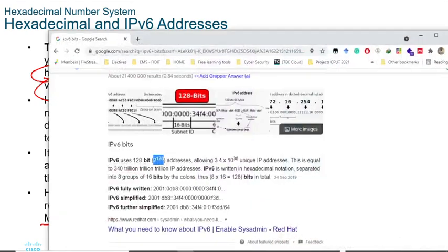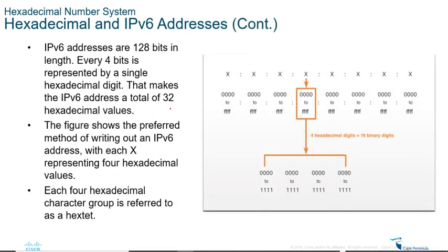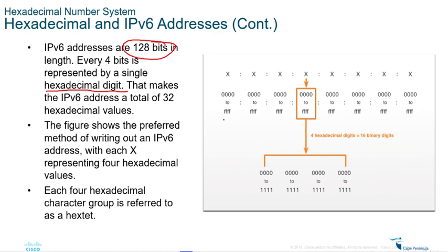IPv6 addresses are 128 bits in length, and every four bits is represented by a single hexadecimal digit. A single hexadecimal digit is one letter or number, and the IPv6 address is made up of a total of 32 hexadecimal values. If you add up all 32 of those hex characters, that's your full address. The preferred method of writing out an IPv6 address has each X representing four hexadecimal values.